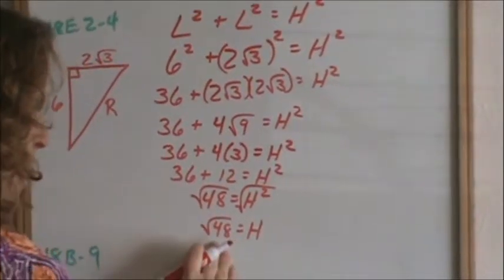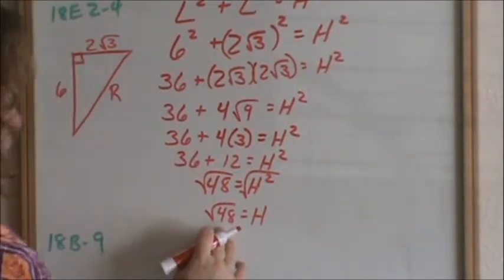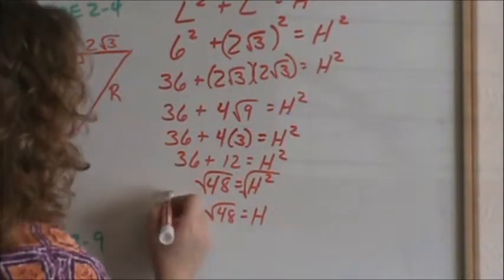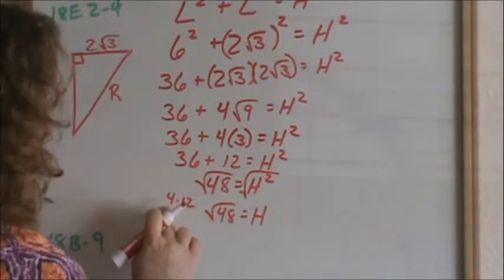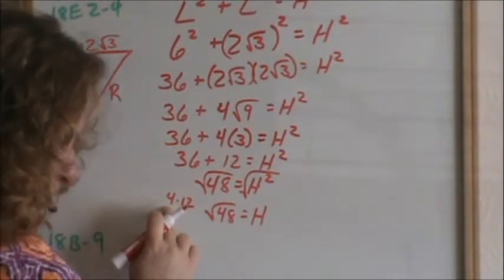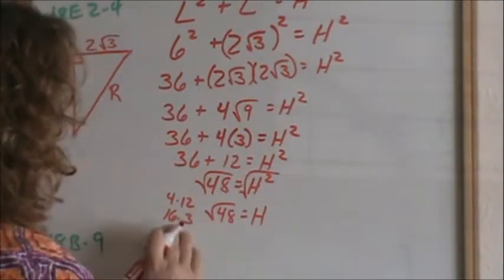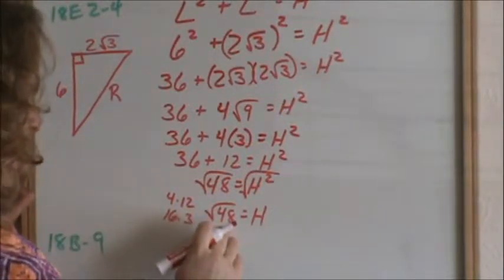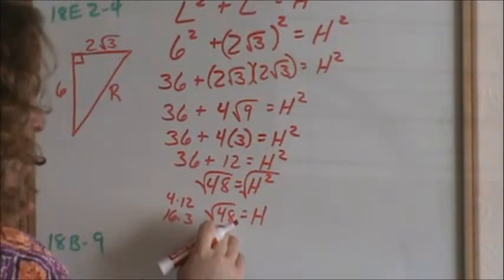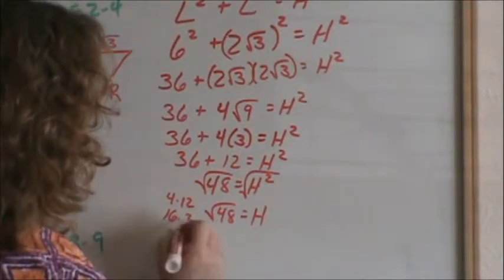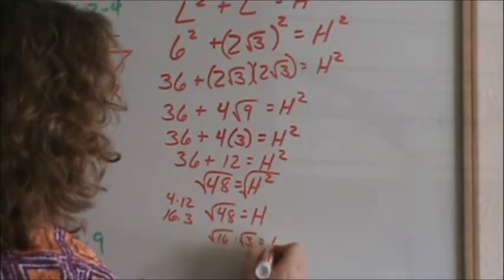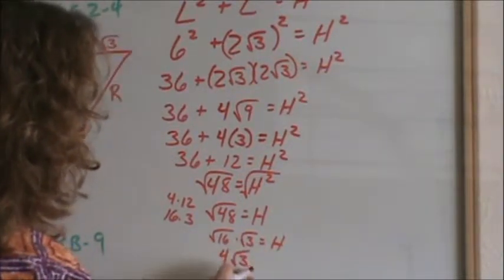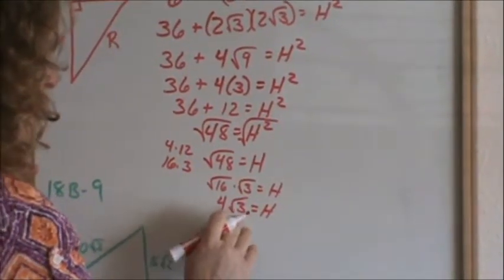Not done — you always have to simplify your radicals. In simplifying your radicals, you're trying to determine what the factors of 48 are, and you want one of the factors to be a perfect square. I could use 4 times 12, and 4 is a perfect square, but there is actually a larger factor you can use: 16 times 3. Take 48 and keep dividing perfect squares into it until you find the largest perfect square that will divide into it. Using 16 and 3, you have square root of 16 times square root of 3. Square root of 16 equals 4, then you have square root of 3. Square root of 3 does not simplify any further, so the length of your hypotenuse is 4 times square root of 3.